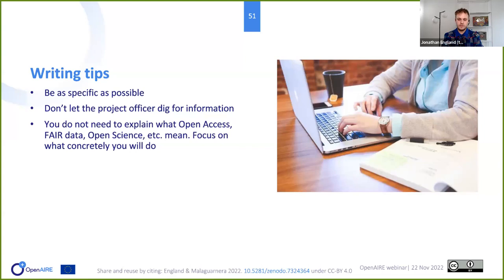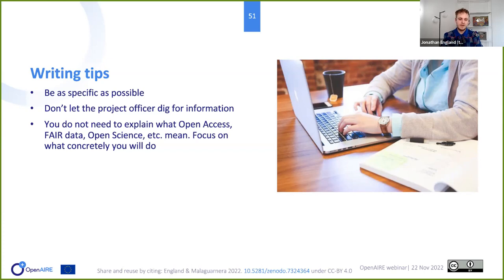As I said before — and it's the same kind of rules for both project proposals and DMPs — be as specific as possible. Reviewers will not dig for the information, so you have to lay it out for them. As long as you're specific about your choices, you're more credible in your proposal. One thing I see a lot: researchers explaining what open access and FAIR data are. The people reviewing obviously know what open science is, so you don't need to do that. Focus really on your actual project.